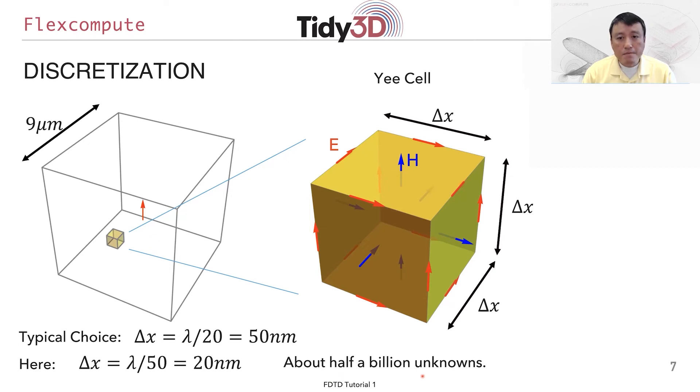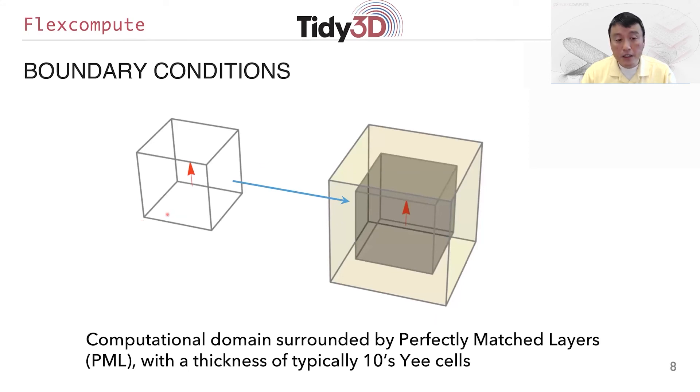So the other aspect of the simulation is on the boundary condition. So we have a computational domain set up like this, but we would like the field that's emitted from the dipole to go out of the computational domain without coming back to interfere with it so that we can generate a radiating pattern of a dipole radiating into free space. For this purpose, in FDTD, it's very common to surround the computational domain by a specially designed absorber called the perfectly matched layer. The thickness of this layer is about typically 10 of the Yee cells.